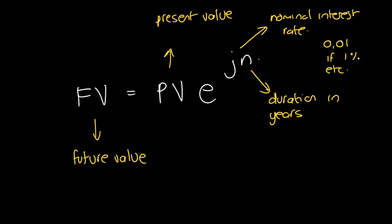So that's the formula: j is your nominal interest rate in decimal fraction notation, and n is your duration in years.